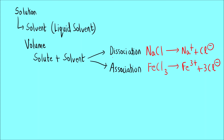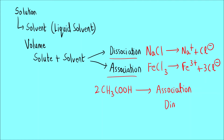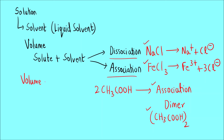Association is the opposite process. One example of association is acetic acid — two molecules of acetic acid undergo association to form a dimer, written as (CH₃COOH)₂, interacting via intermolecular hydrogen bonding. In this way, volume of solute can either increase as in dissociation, or decrease as in association. That is why volume of solution is not equal to volume of solute plus volume of solvent.